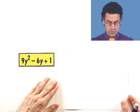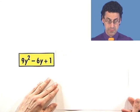Let's try another example together, just to give you a sense of how you can ride the wave of perfect squares. Take a look at this, 9y squared minus 6y plus 1.